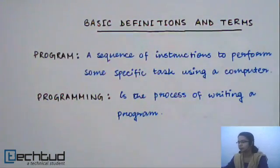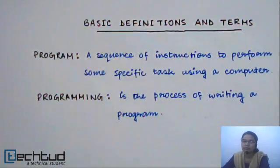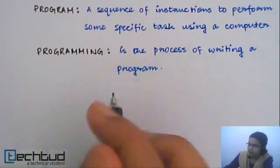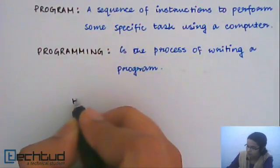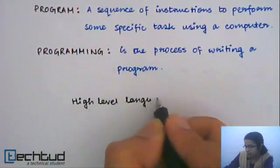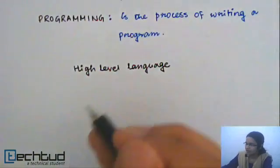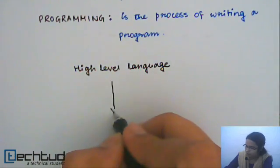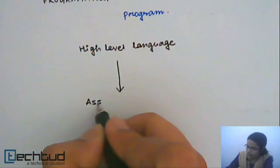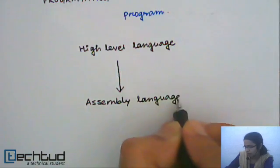We want some requirement to be fulfilled by a computer and we write a program to fulfill our need. Usually we write our program in some high-level language — for example, C, C++, Java, etc. This high-level language is then transformed into assembly language code.